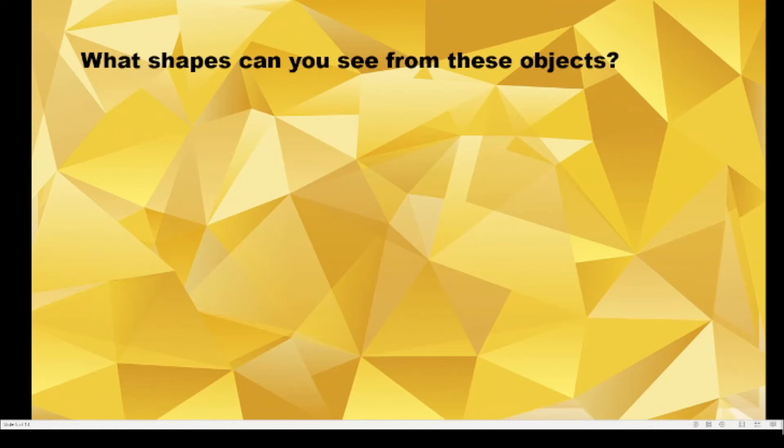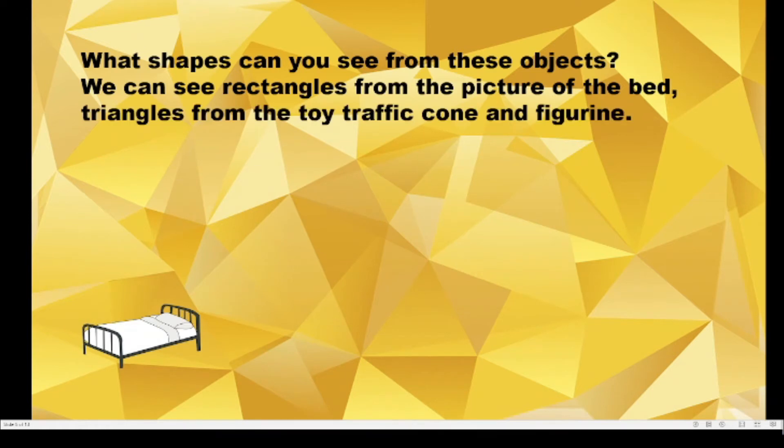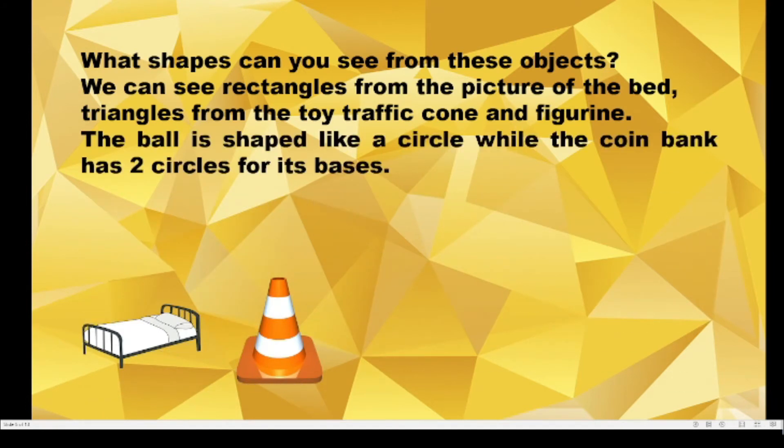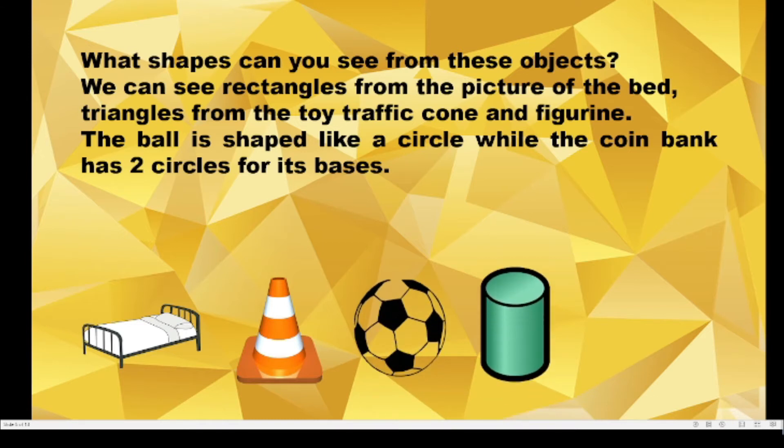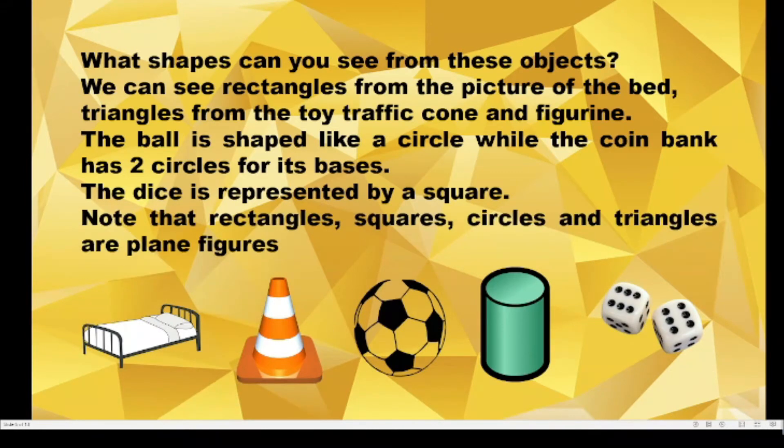What shapes can you see from these objects? We can see rectangles from the picture of the bed, triangles from the toy traffic cone and figurine. The ball is shaped like a circle, while the coin bank has two circles for each base. The dice is represented by a square. Note that rectangles, squares, circles, and triangles are plane figures.